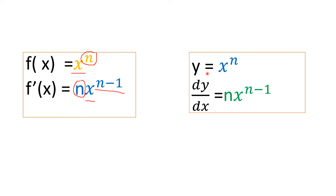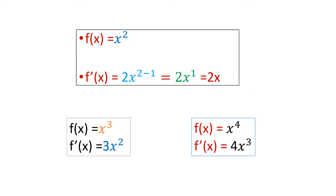This same function can also be given in the form y equals x power n. Here, the derivative is written as dy by dx equals n multiplied by x power n minus 1. Whether given as f(x) or y, it is identical. This is the power rule: n, x, n minus 1.